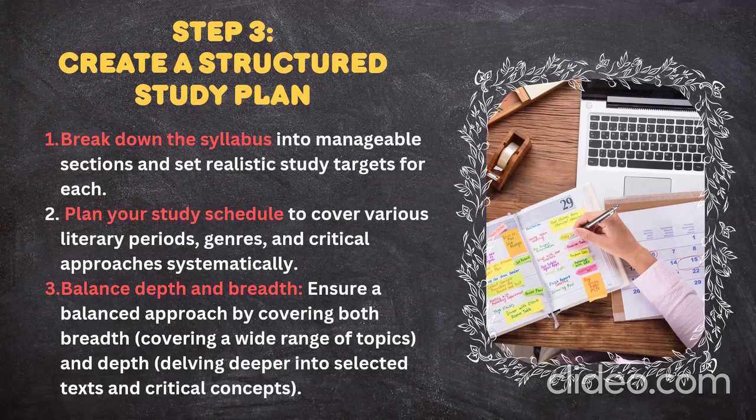Break down the syllabus. For literature, there are three major categories: literary periods or ages, genres, and criticism or critical approaches. Your schedule must cover either periods, genres, or literary criticism separately — combining all together will be confusing. Whenever you take a unit, go with both depth and breadth. You must balance covering a wide range of topics as well as covering each age in depth before moving to the next unit.